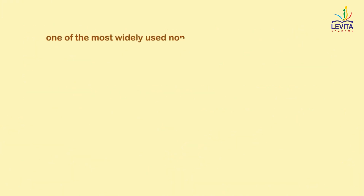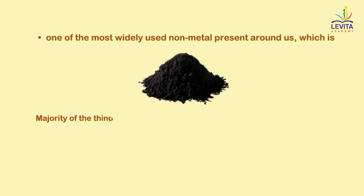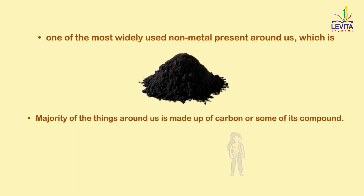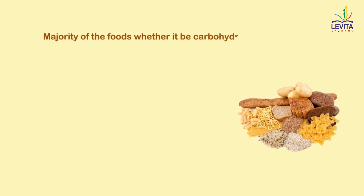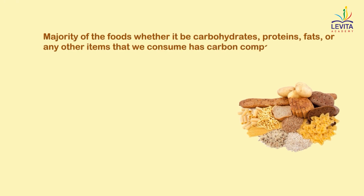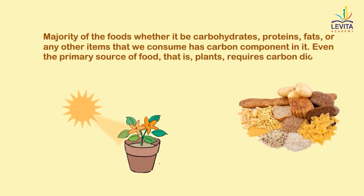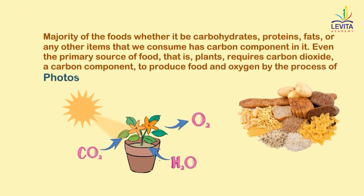Today, we are going to discuss about one of the most widely used non-metals present around us, which is none other than carbon. The majority of things around us is made up of carbon or some of its compounds. Our body is made up of cells in which carbon is one of the most abundant components. The majority of foods — whether carbohydrates, proteins, fats, or any other items we consume — has a carbon component in it. Even the primary source of food, plants, requires carbon dioxide, a carbon compound, to produce food and oxygen by the process of photosynthesis.